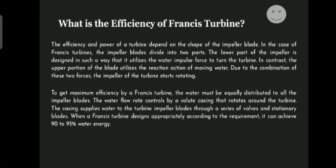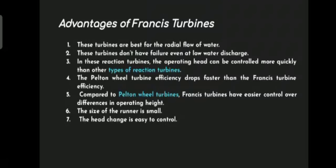Advantages of Francis turbine: these turbines are best for radial flow of water. They do not fail even at low water discharge. In this reaction turbine, the operating head can be controlled more quickly than other types. The Pelton wheel turbine efficiency drops faster than the Francis turbine.